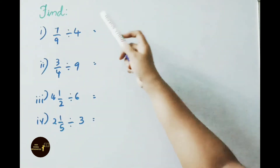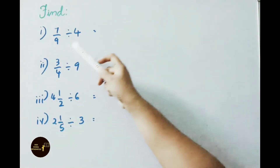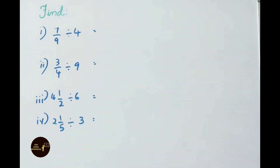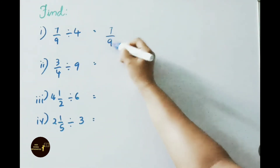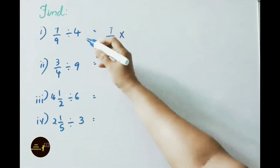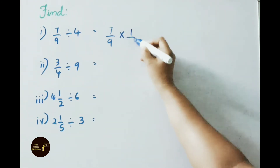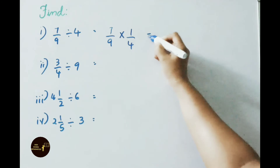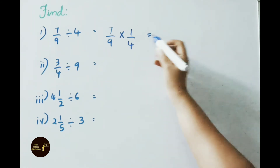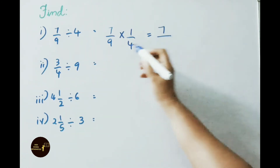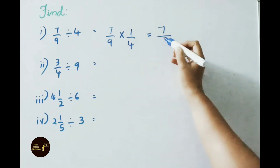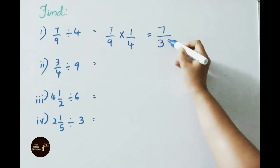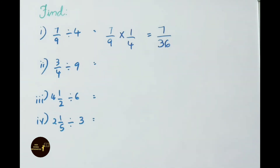See next sum: find 7/9 divided by 4. Write down 7/9 × reciprocal of 4, which is 1/4. Multiply numerator: 7 × 1 = 7, multiply denominators: 9 × 4 = 36. So the answer is 7/36.